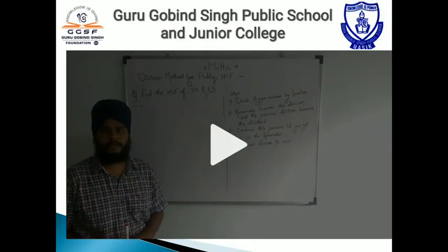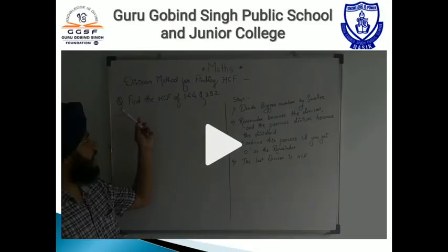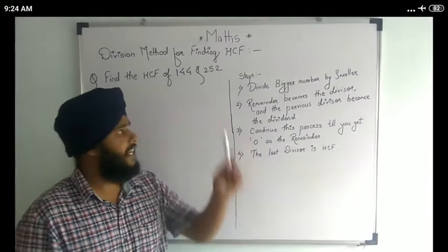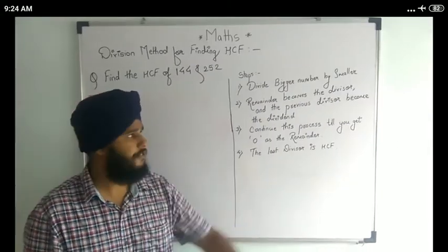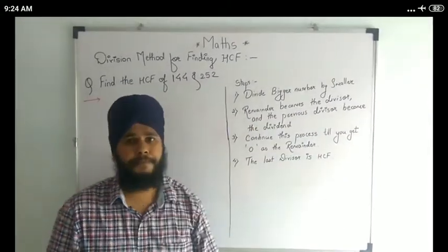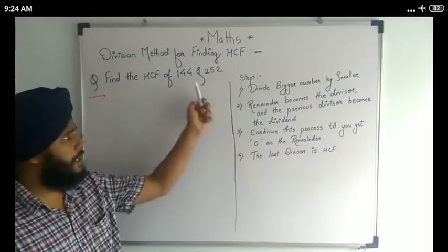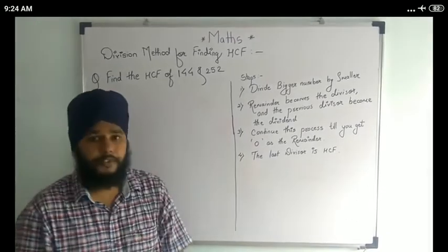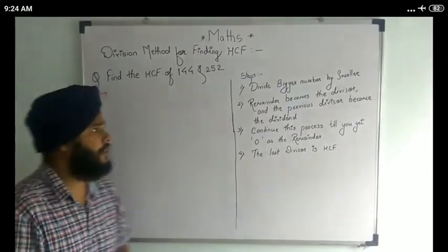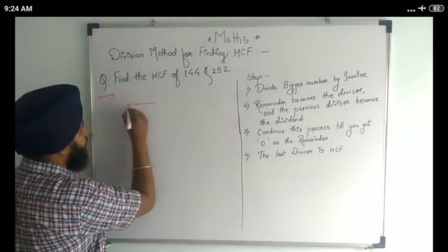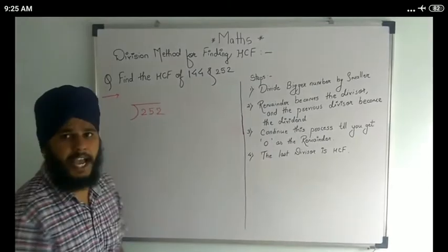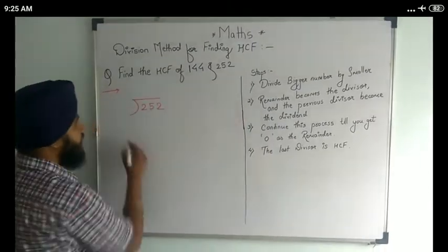Let us see the next example. Find the HCF of 144 and 252. Our first step is to divide the bigger number by the smaller number. Here the bigger number is 252 and the smaller number is 144. We have to arrange it in division form, so the dividend is 252 and the divisor is 144.